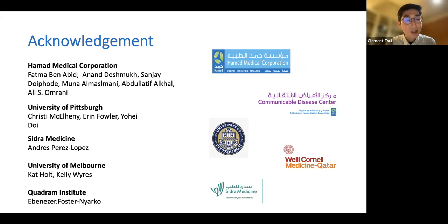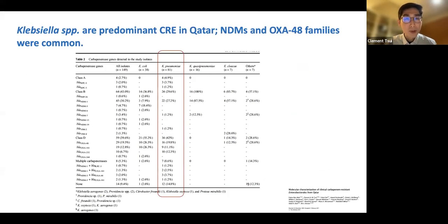Thank you for discussions and suggestions. The story began with a small molecular epidemiology study to look at the molecular epidemiology of carbapenemase-producing Enterobacteriaceae. There was a study published last year on the epidemiology of CRE circulating in Qatar. Based on the statistics, we learned that Klebsiella pneumoniae was the most prevalent bacteria carrying carbapenemase in Qatar.